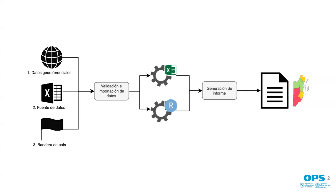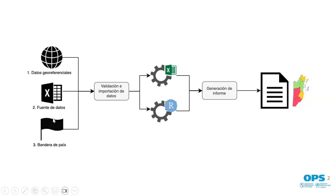In order to deploy the tool, the country will need the following three files. First, the maps or shape files, ideally disaggregated by municipality. Second, the country will need the vaccination coverage data, dropout rate, case-by-case surveillance, rapid response, and other data — all of this should be provided in an Excel spreadsheet. In addition, they need an image of the country's flag.